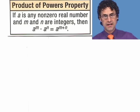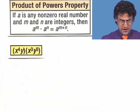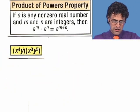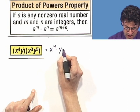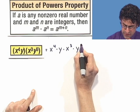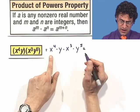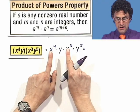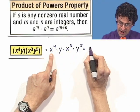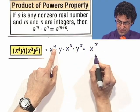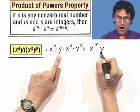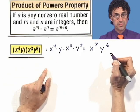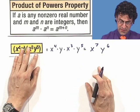Let's apply the Product of Powers property to algebraic expressions. Take the quantity x to the fourth times y, all multiplied by the quantity x cubed times y to the fifth. This is just x to the fourth times y times x cubed times y to the fifth. Using commutativity, multiply x to the fourth by x cubed — same base, add exponents: 4 plus 3 is 7. Then y times y to the fifth — there's an invisible exponent of 1 — so y to the sixth. The result is x to the seventh times y to the sixth.